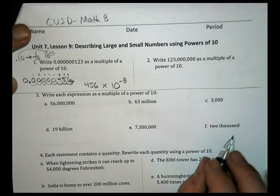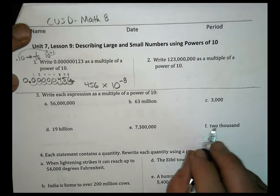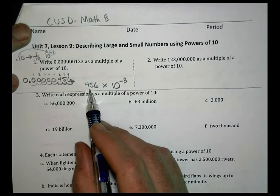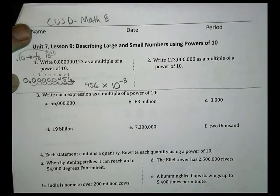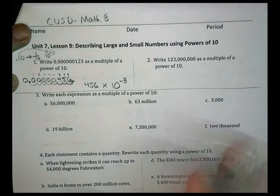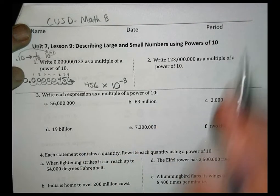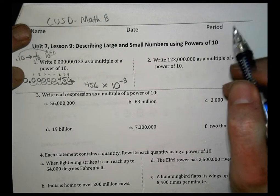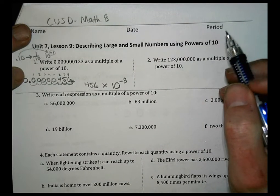So this becomes 456 times 10 to the negative 8. For today's lesson, we're leaving it like that. In future lessons, we'll show you how to write this as 4.56, but we'll do that another day. Leave it like this for now. Let's move on.